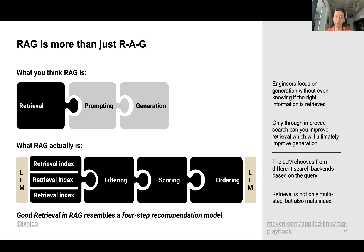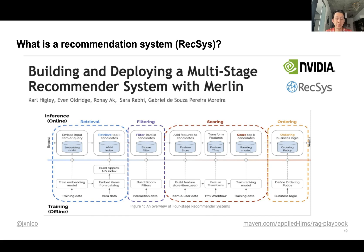You think people are building RAG applications where you do some arbitrary retrieval, shove it into a prompt, and ask a language model to do generation. But there's going to be an LLM in the front end, multiple retrieval backends, some filtering, scoring, ordering, and then you put that back into a language model. A lot of engineers focus on generation before figuring out whether the retrieval is good. Only through improved search can you really improve retrieval, which will ultimately improve generation. This is informed by the classic four-stage recommendation system: retrieval, filtering using interaction data, and ultimately better ordering with additional business logic.